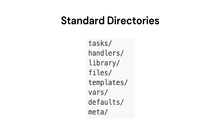The next directory is templates. In this directory, we keep the Jinja2 templates which help us to record the output in a specific format. The next directory is defaults. In this directory, we keep the default variables that are used in the playbook. The last directory is meta. In this directory, the metadata of the role is stored along with the role dependencies.